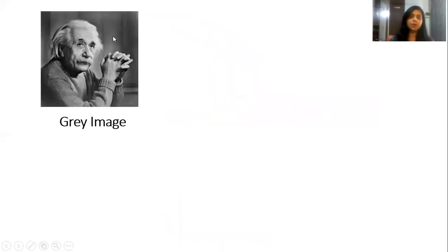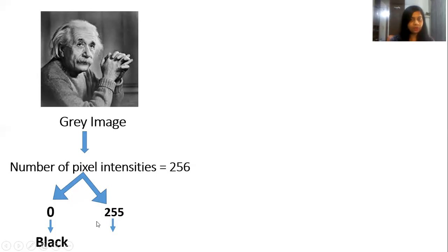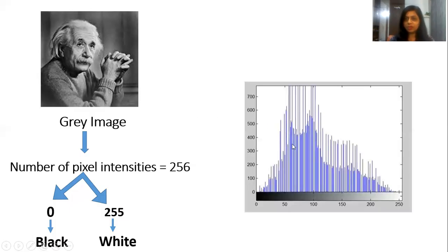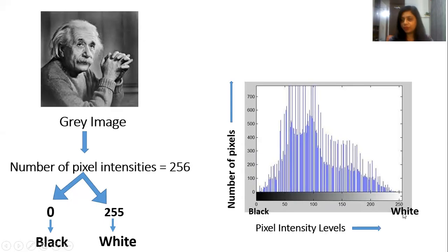Now let us take another example. This is an Einstein image which is a grayscale image. In this image there are a total of 256 gray intensity values that vary from 0 to 255, wherein 0 represents perfect black and 255 represents perfect white. The Histogram of this image has the x-axis representing pixel intensity levels and the y-axis representing number of pixels, with intensity levels ranging from 0 to 255.